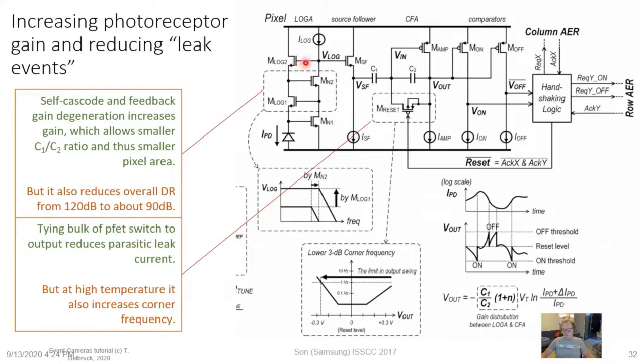The increased front-end voltage gain together with limited supply voltage decreases overall dynamic range from about 120 dB to about 90 dB — usually fine for most applications. This increased voltage gain, together with limiting the supply current in the photoreceptor and source follower, allows bandwidth control for noise limitation. The cascoded gain structure reduces the time constant at the front end, making the pixel faster when desired, while bandwidth can always be reduced by lowering the supply current to limit noise.